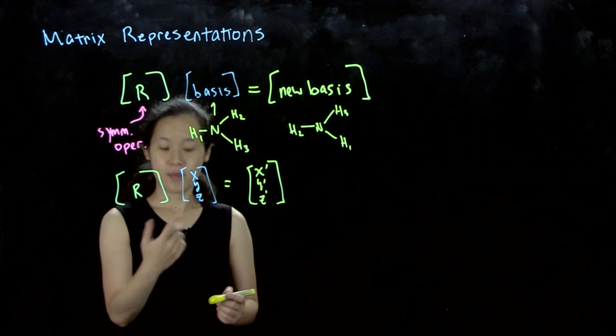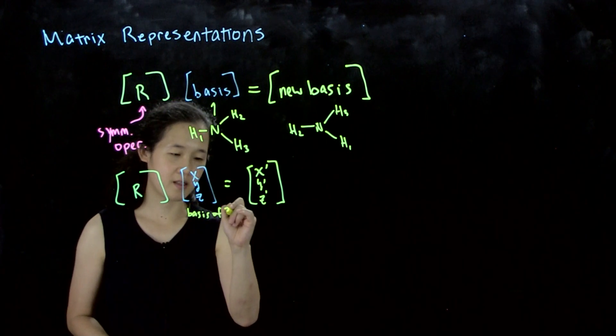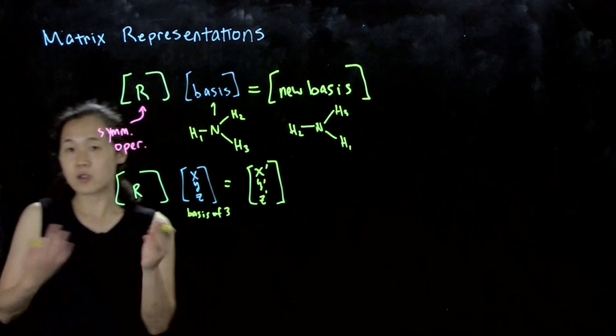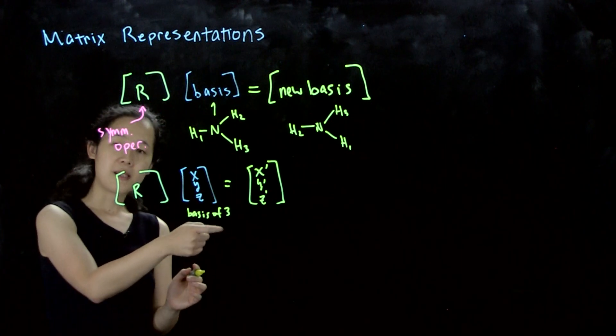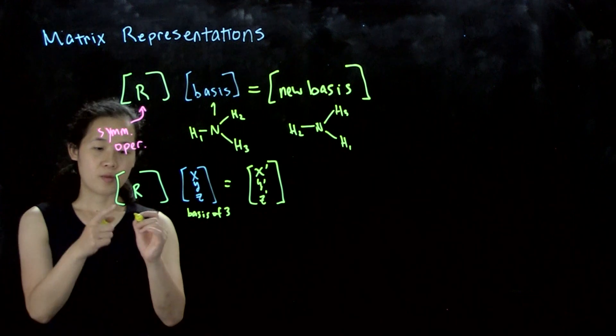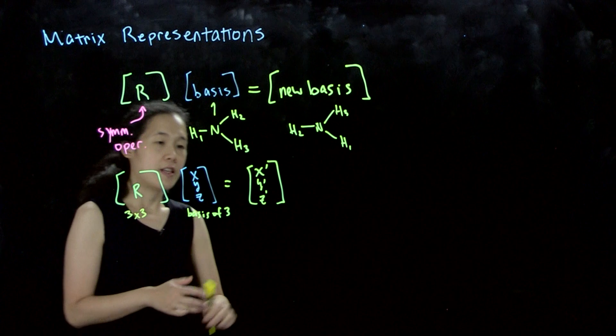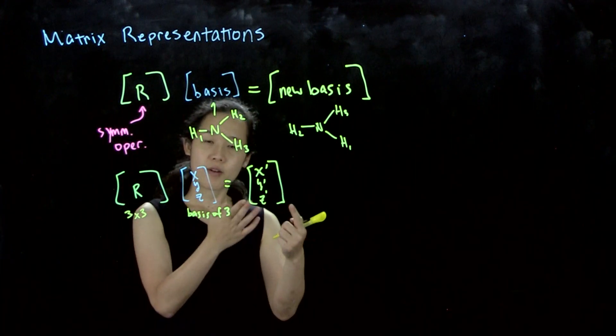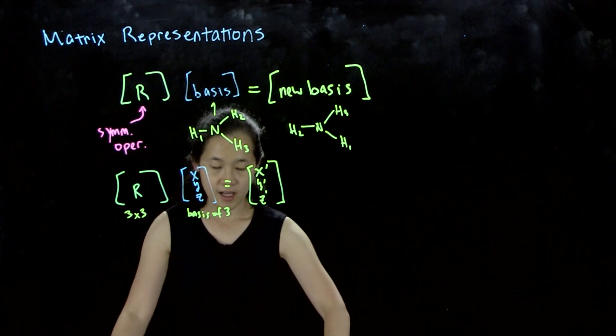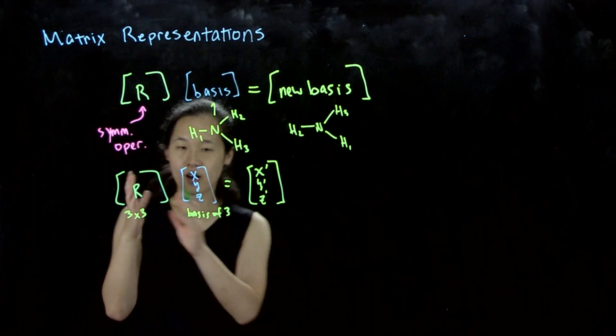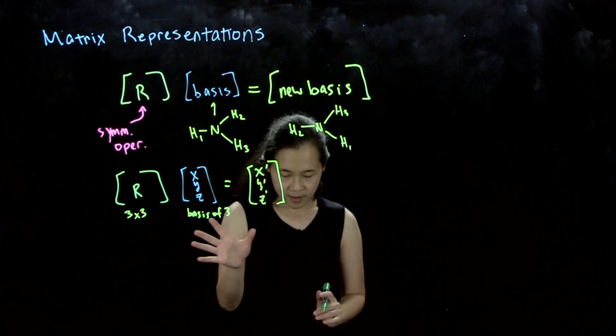If we were doing d orbitals, this would be a five by one vector. But because it's a basis of three, this will be a three by three matrix. The final X', Y', Z' is going to be some transformation of our original XYZ, so R times XYZ is a new function of XYZ.